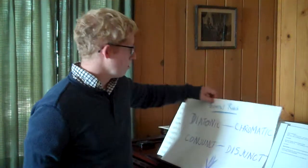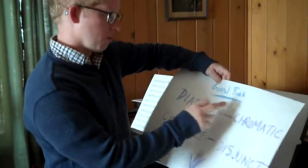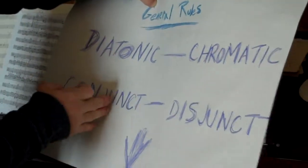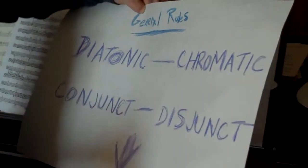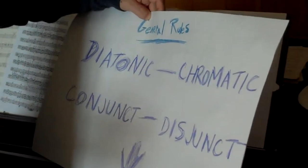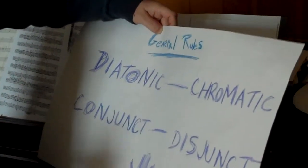So here I have a comparison between diatonic and chromatic, hopefully you're already familiar with that, and then conjunct versus disjunct movement. Now conjunct is, for those of you not familiar, because it is kind of specific to counterpoint...